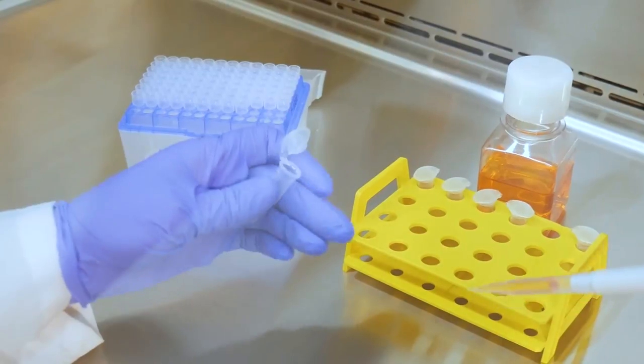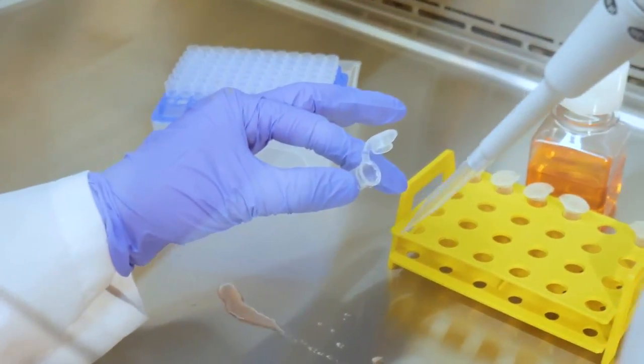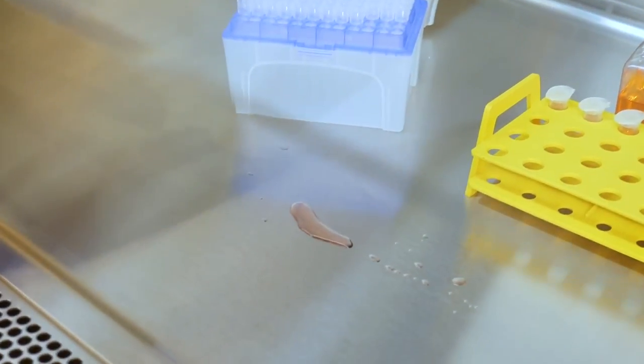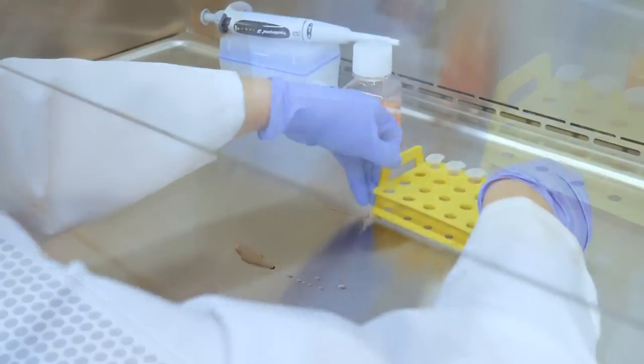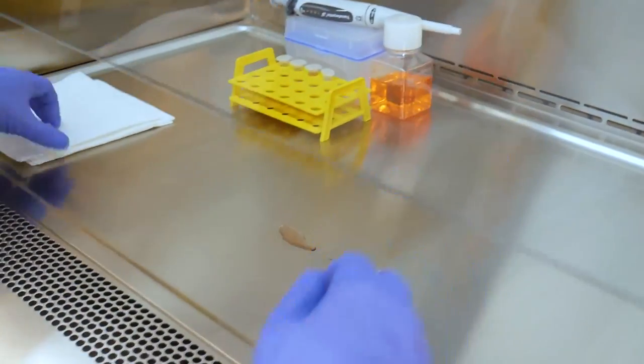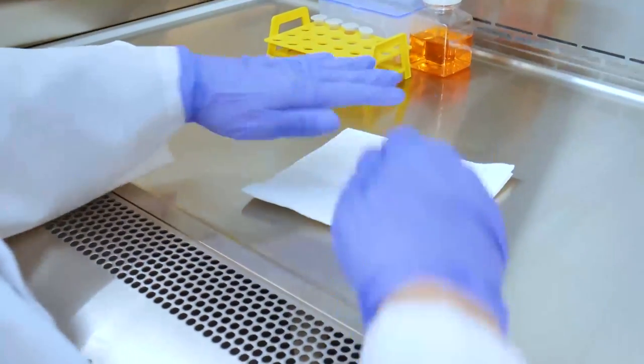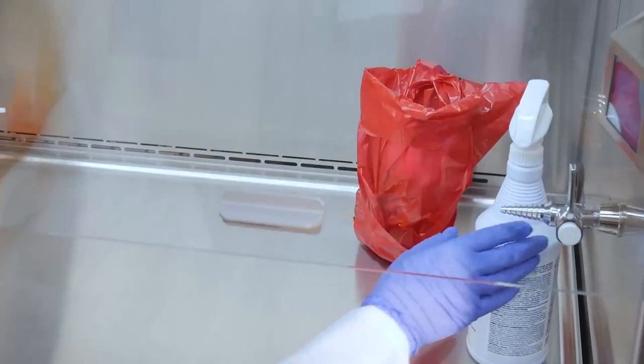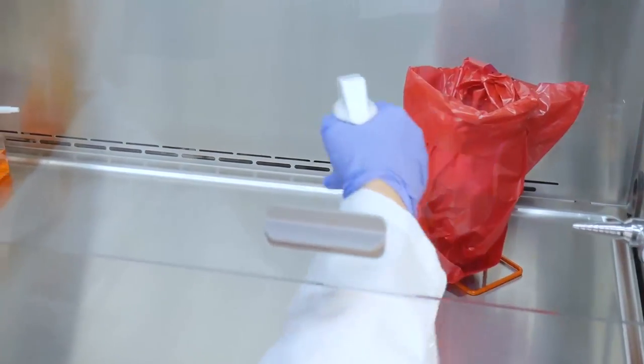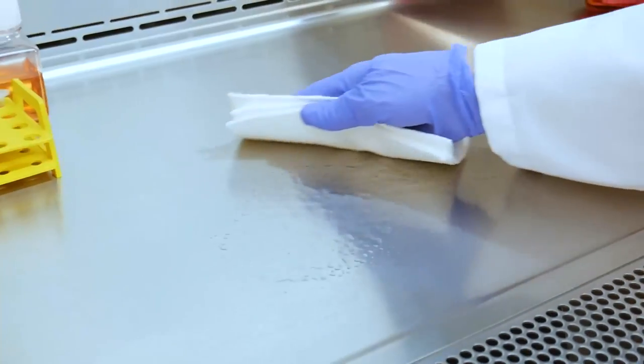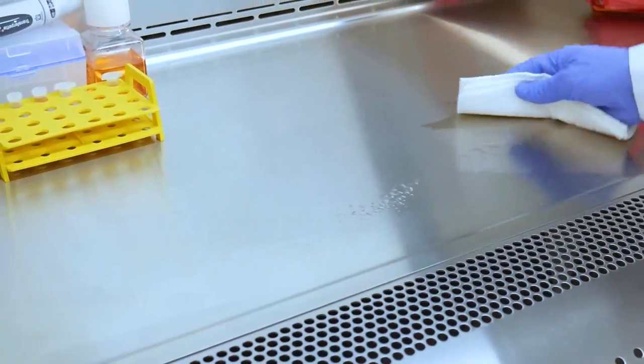If a spill occurs within the cabinet, address it immediately. Leave the BSC's blower running with the sash at operating height while cleaning the spill to ensure that the cabinet contains any aerosols generated during cleanup. Cover the spill with a laboratory wipe to limit spreading within the cabinet. Then apply a suitable disinfectant to the spill and let it sit for the manufacturer's recommended contact time. Wipe up the spill with a disposable lab wiper.